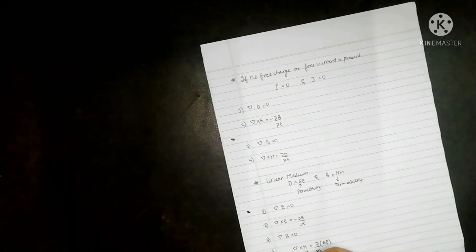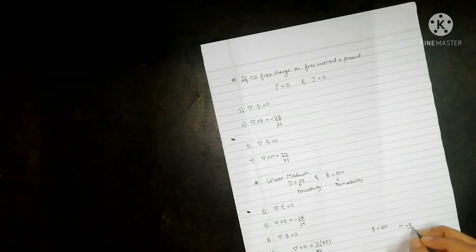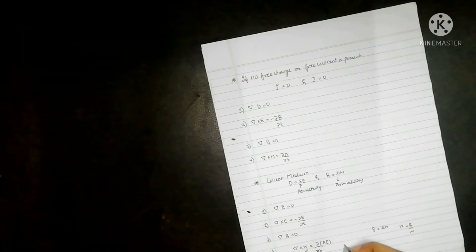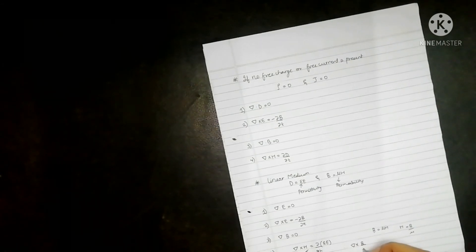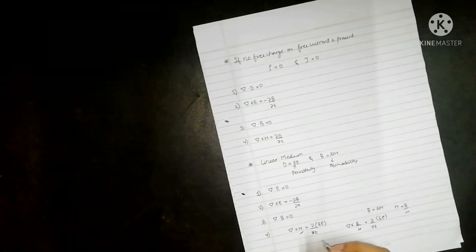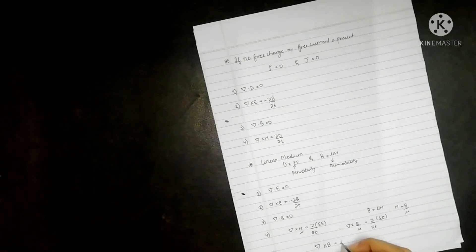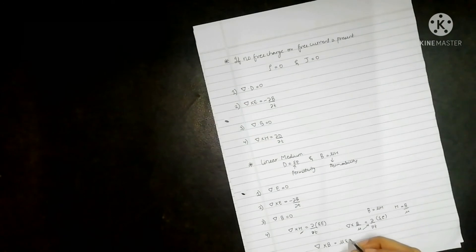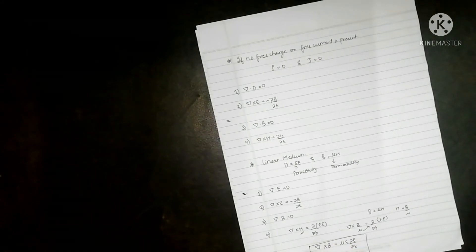Since D equals epsilon E and B equals mu H, H will be B by mu. So in place of H I can write B by mu. Therefore del cross (B by mu) is equal to dou by dou t of epsilon E. This can be rewritten as: del cross B is equal to mu epsilon dou E by dou t. So this is the fourth Maxwell's equation.